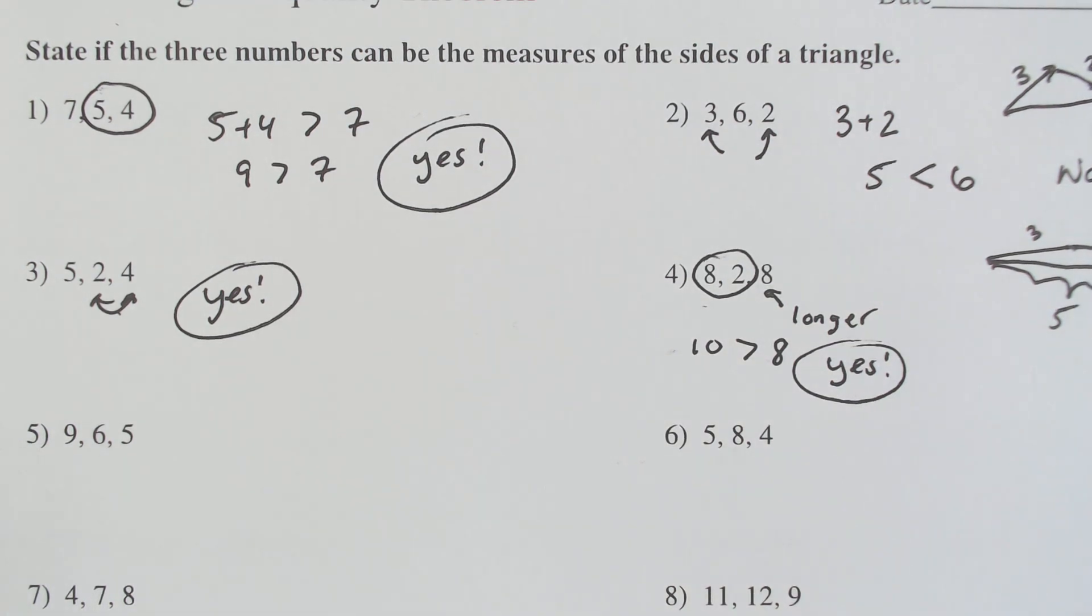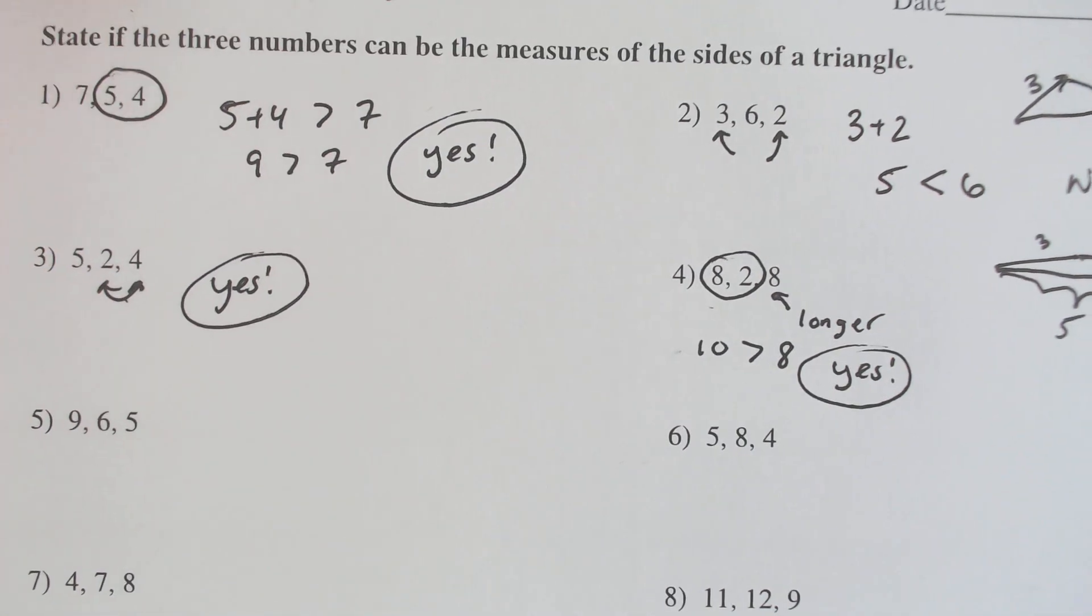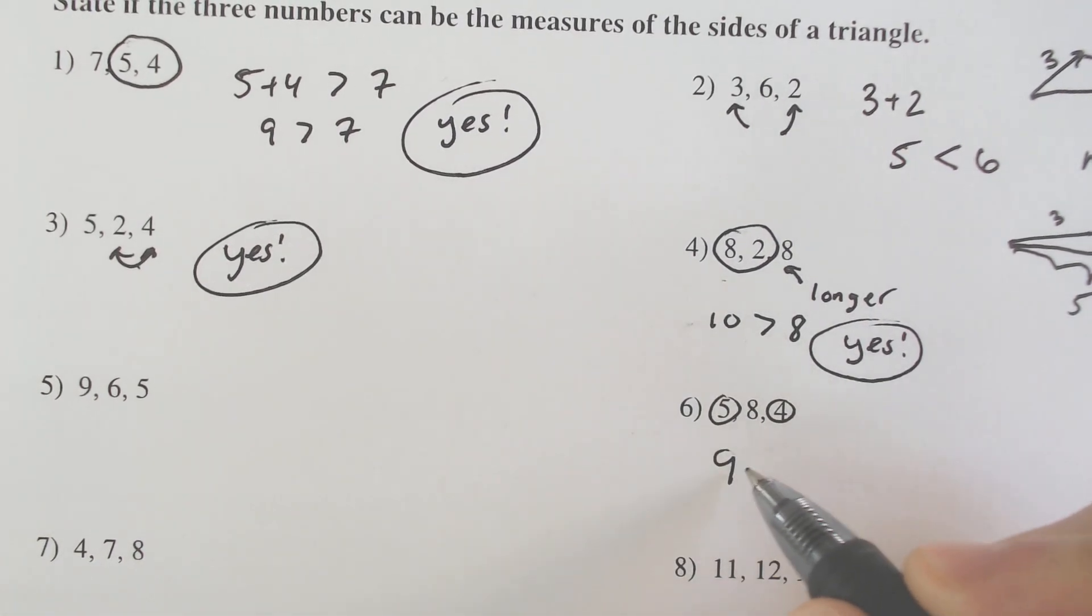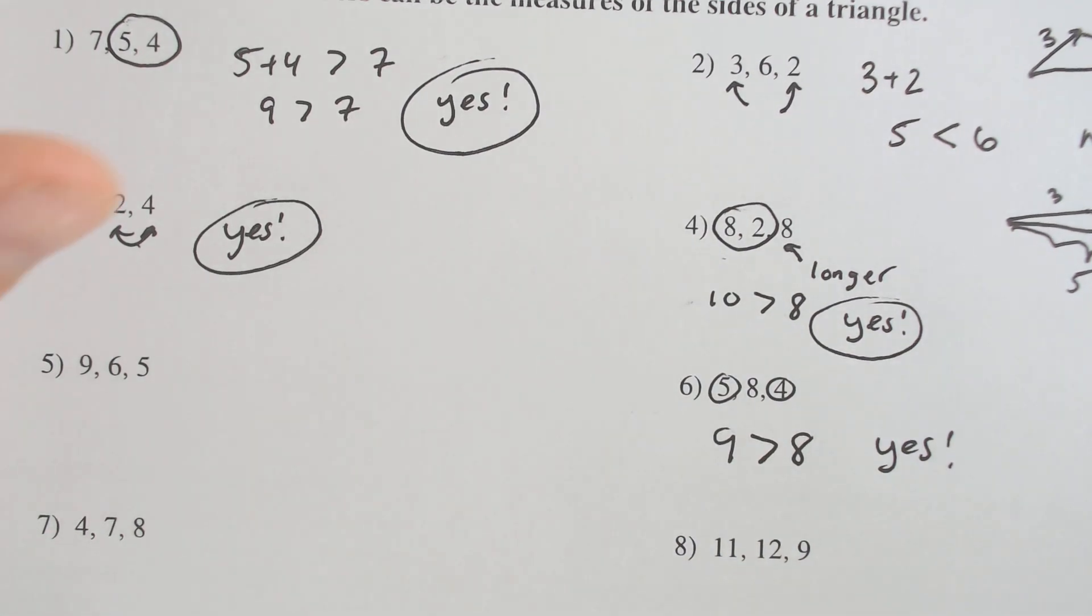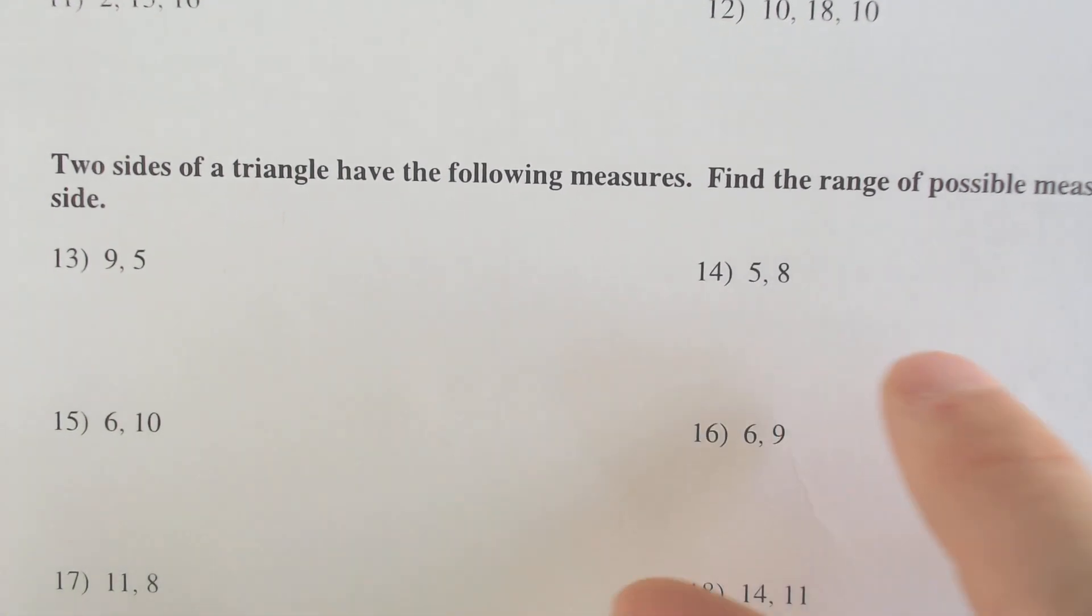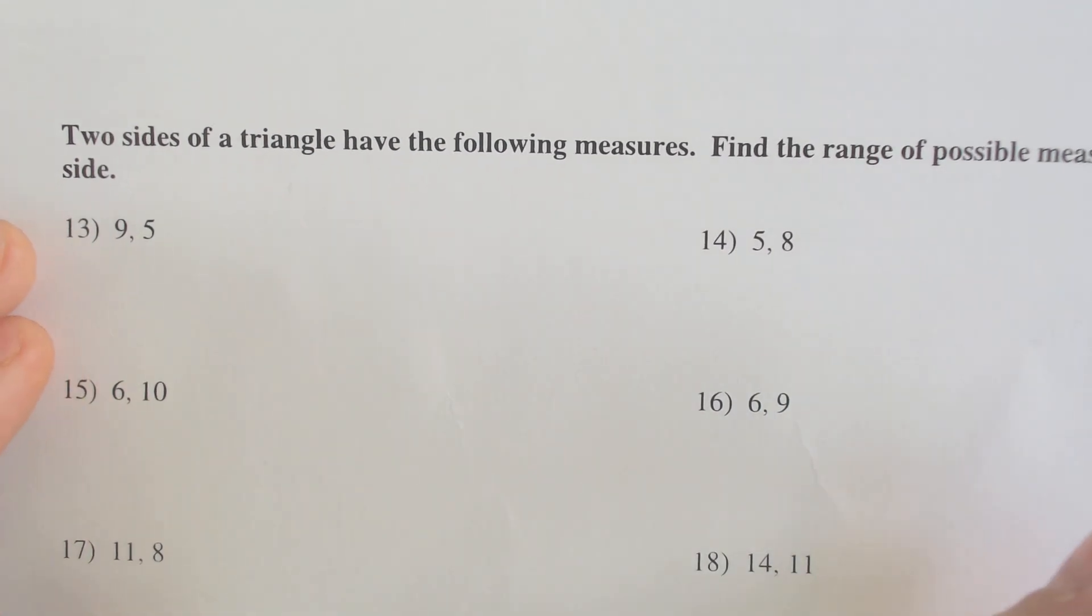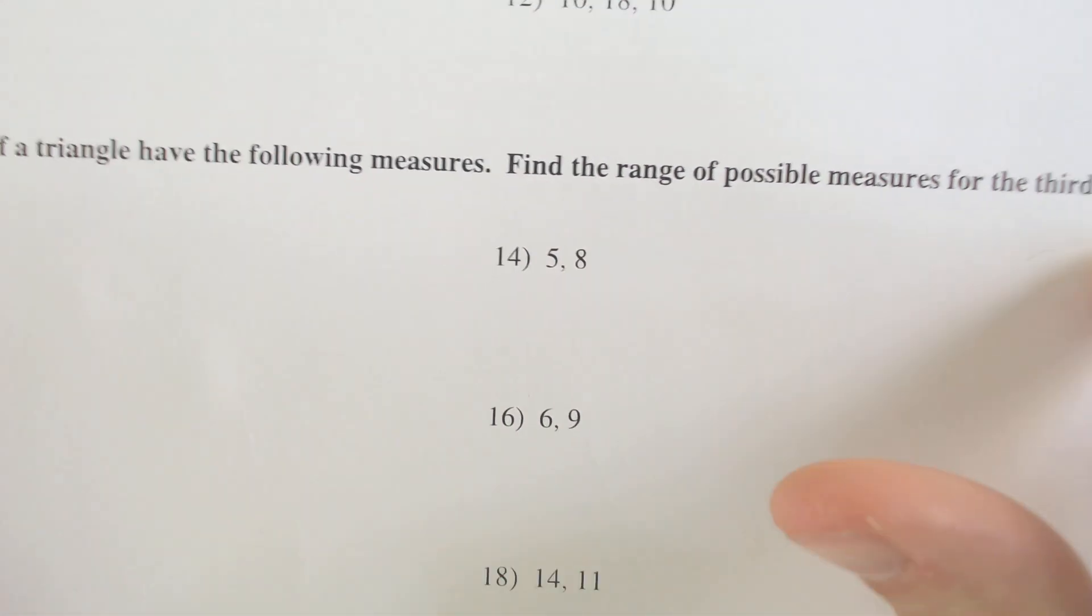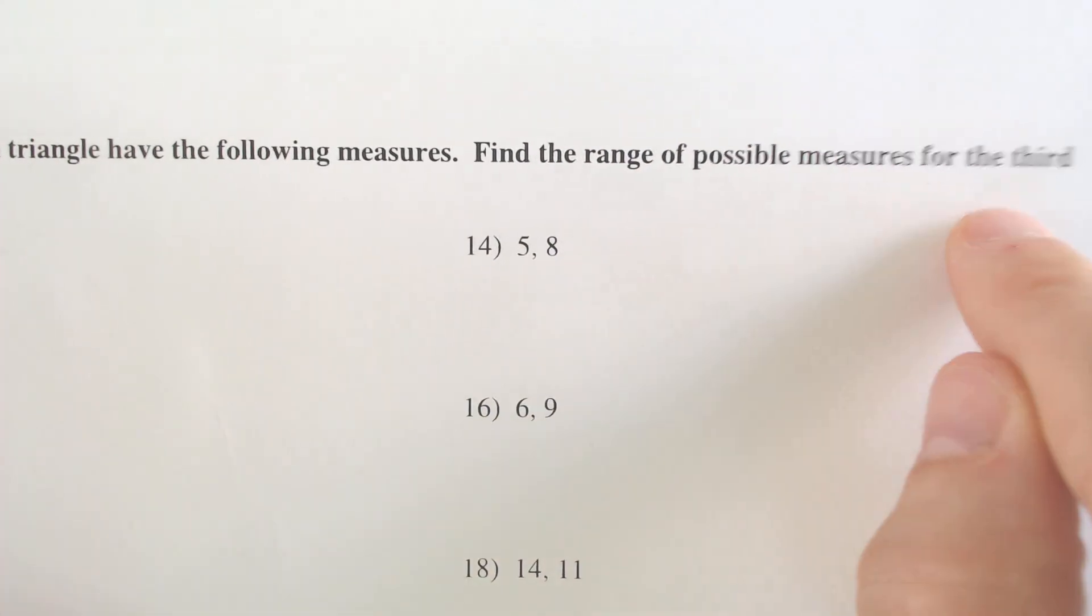So that's all we're doing for these. And it does get a little bit more complicated. I think that you can understand that as long as the two shorter sides are bigger than the longer, it's a triangle. But if it isn't, it's not. Now, here is where it does sometimes get a little bit more complicated. If you're provided with two sides of a triangle, and you need to find the possible range of values for the third side.